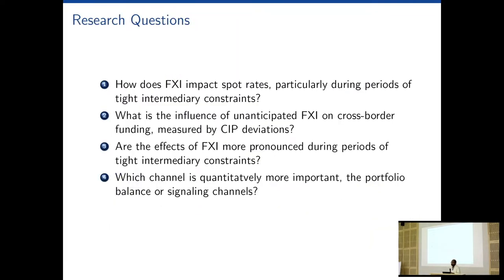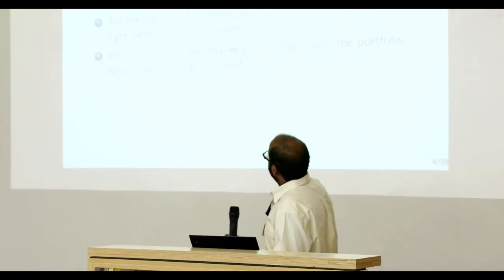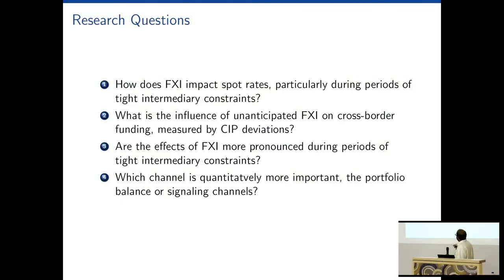The research questions are: first, how does FXI impact spot rates? Our main contribution here is thinking about how the effectiveness of FXI changes with intermediary constraints. We also look at CIP deviations as a proxy for the scarcity of USD funding. If FXI is alleviating intermediary constraints, we should find that the absolute level of CIP deviations reduces following the intervention. We are also interested in the tension between the signaling versus portfolio balance channel — the dollar intermediation channel is principally a portfolio balance channel.